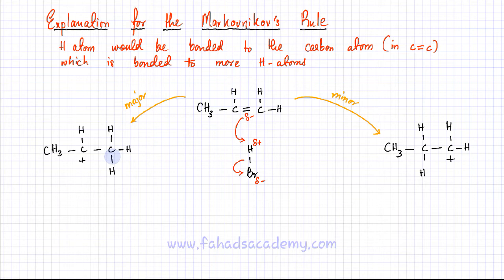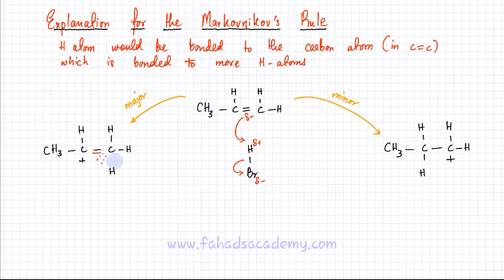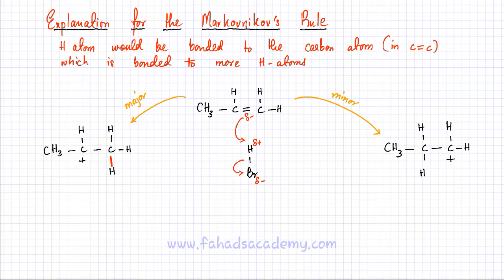There are two possibilities. The double bond gets attracted to the hydrogen, and those electrons go and bond with it. The double bond becomes a single bond, and since two electrons from the double bond belonged to one carbon atom, that carbon atom gets a +1 charge — it becomes a carbocation.